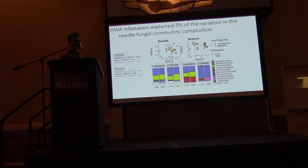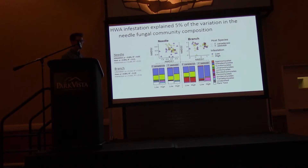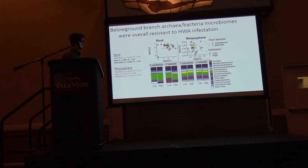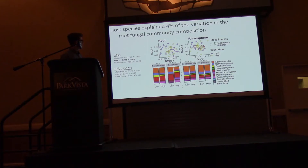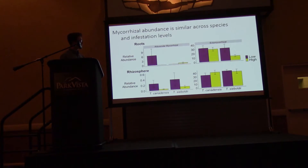Looking at the fungal microbiomes in the above-ground plant tissues, we only see a hemlock woolly adelgid effect in the needle, and it explains about five percent of the variation in the community. But we have a relatively stronger host species effect, explaining 15 to 20 percent of the above-ground microbiome. Similar to what we saw for archaea and bacteria, the fungal root microbiome is only explained by host species, and the rhizosphere is pretty consistent among host species and hemlock woolly adelgid infestation.